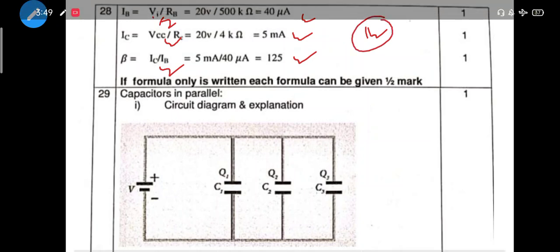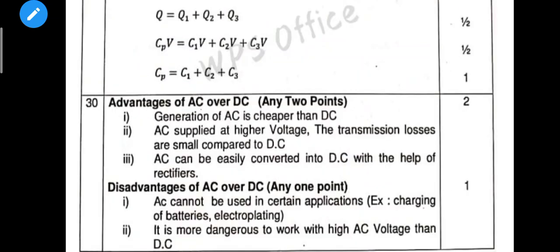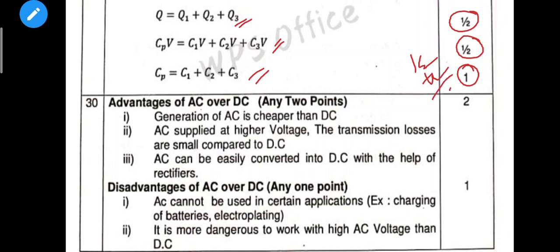Next, capacitors in parallel — circuit diagram plus explanation: explanation is 1 mark. Q = Q1 + Q2 + Q3 is half a mark. CV_p = C1V + C2V + C3V is half a mark. Therefore Cp = C1 + C2 + C3 — final equation is 1 mark. With the diagram that is 2 and a half marks total.